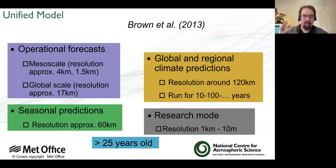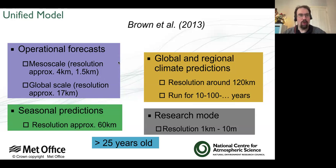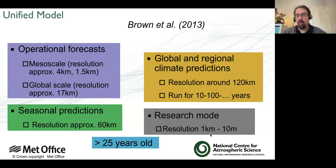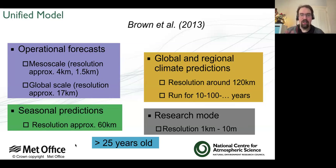The unified model is interesting in its philosophy - it wants to represent all these different scales. Traditionally, UKCA thinks about climate scales, so 120 kilometre resolution or lower, running for tens to hundreds of years. But the Met Office uses exactly the same model for operational forecasts you might see on TV, for seasonal predictions around ENSO or rainfall. They might also run it in research mode at sub-one-kilometre resolution. The code itself is over 25 years old and has been worked on by thousands of people, making it very robust in what it does.